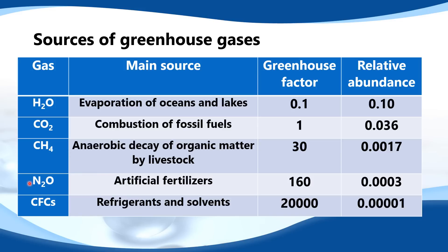Next is N2O, di-nitrogen oxide — the main source is artificial fertilisers. And finally the CFCs, the chlorofluorocarbons — the main sources are refrigerants and solvents. Next we look at the greenhouse factor and the relative abundance.